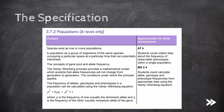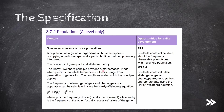We should know that species exist as one or more populations. We should be able to define a population as a group of organisms of the same species occupying a particular space at a particular time that can potentially interbreed. We need to know the concepts of gene pool and allele frequency, the Hardy-Weinberg Principle and how it provides a mathematical model which predicts that allele frequencies will not change from generation to generation, the conditions under which the principle applies, and how to calculate the frequency of alleles, genotypes and phenotypes in a population using the Hardy-Weinberg equation.